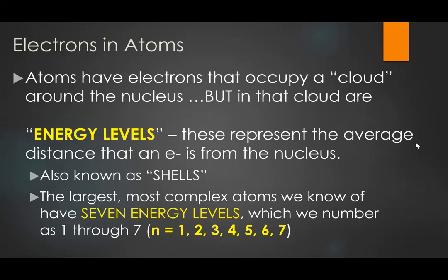The more electrons an atom has, the more energy levels will be occupied. An element like sodium with just 11 electrons will typically have electrons in the first 3 energy levels, while a larger atom might have electrons in as many as 6 or even 7 energy levels. It may even be that someday we'll synthesize elements in the lab that have electrons in an 8th energy level.